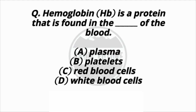Question 8. Hemoglobin (Hb) is a protein that is found in the dash of the blood. Option A: Plasma. Option B: Platelet. Option C: RBC (Red Blood Cell). Option D: WBC (White Blood Cell). Answer: Option C — RBC, Red Blood Cells.